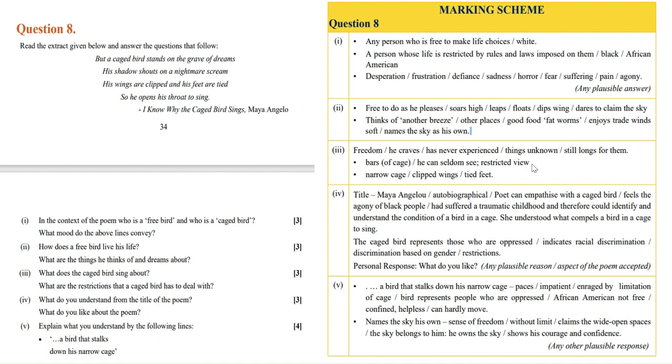The basic meaning is that despite having the full sky to float and fly freely, he wants more air. He wants to go to other places. He wants good food, fat worms. He enjoys trade winds and he names the sky his own. In the English context, his dreams were to conquer more in that space.